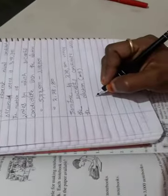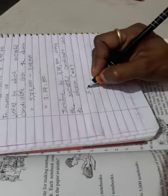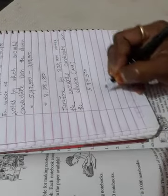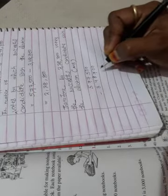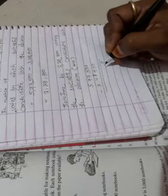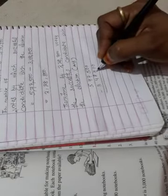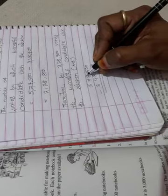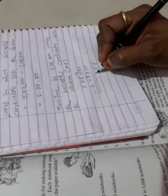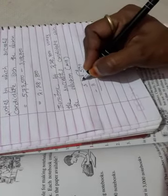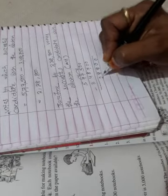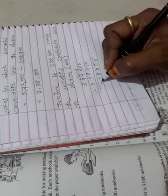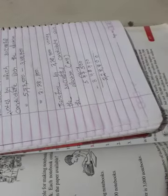Here, we see the subtraction. 6 minus 0 is 6, 6 minus 0 is 6, 0 minus 4 is 2, 5 minus 0 is 5, 0 minus 3 is 2. That is 2,28,800.